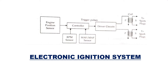Looking at the internal block diagram of the electronic ignition system, you have an engine position sensor, a controller, a driver circuit, RPM input, a MAF sensor, and a transformer. The controller is the important element here — it manages when to give the spark for the mixture of fuel and air. This controller gets its input from the engine position.